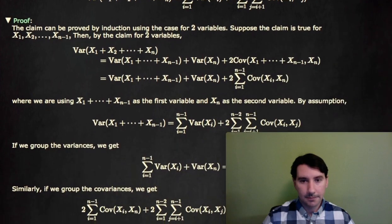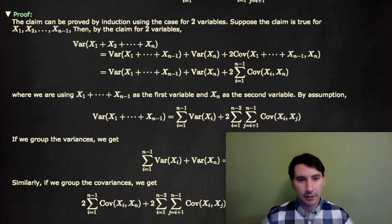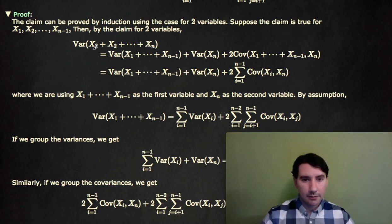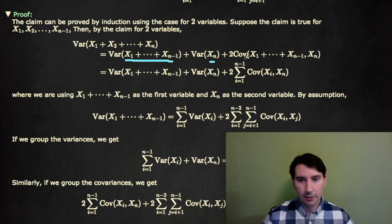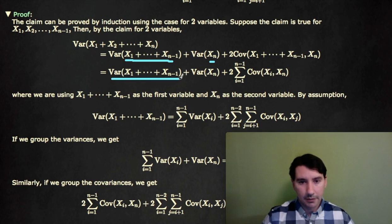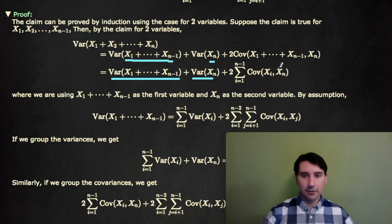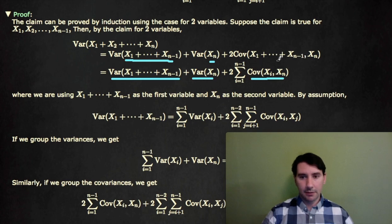This proof can be done by induction. We showed the case for two variables above. Suppose it's true for X1 through Xn minus 1. Then the variance of X1 through Xn can be treated as the variance of two random variables: the sum X1 through Xn minus 1, and Xn. By the two-variable property, this equals the variance of X1 to Xn minus 1, plus the variance of Xn, plus 2 times the sum from i equals 1 to n minus 1 of the covariance of Xi with Xn.